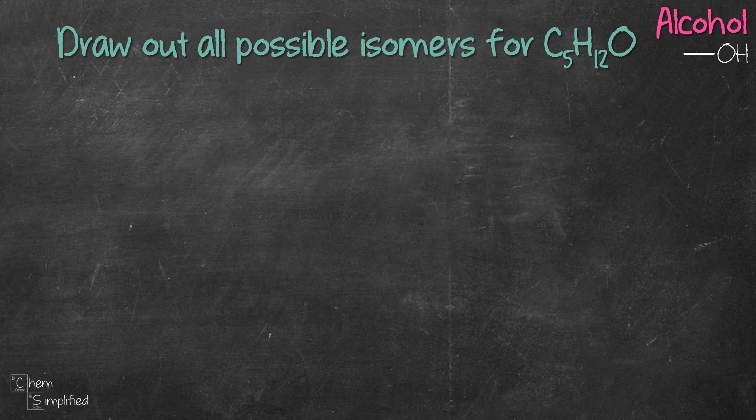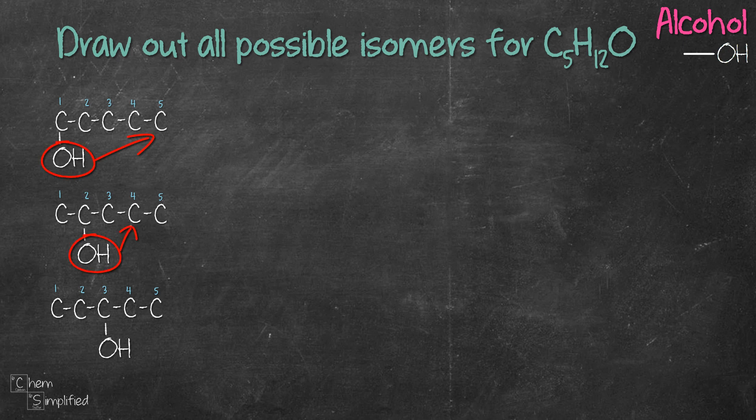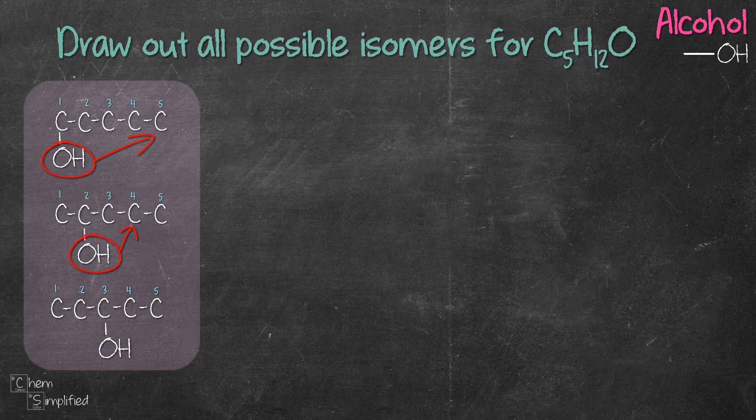Let's start by drawing a five carbon chain alcohol, meaning five carbons connected straight in a row and then we place OH at the first carbon. That will give us our first structure. We can then move the OH group to the second carbon like this and then move again to the third carbon and that will give us our third structure. Now if we move OH to the fourth and the fifth carbon, we'll essentially get back the first two structures that we have already drawn. So that's all for the five carbon chain.